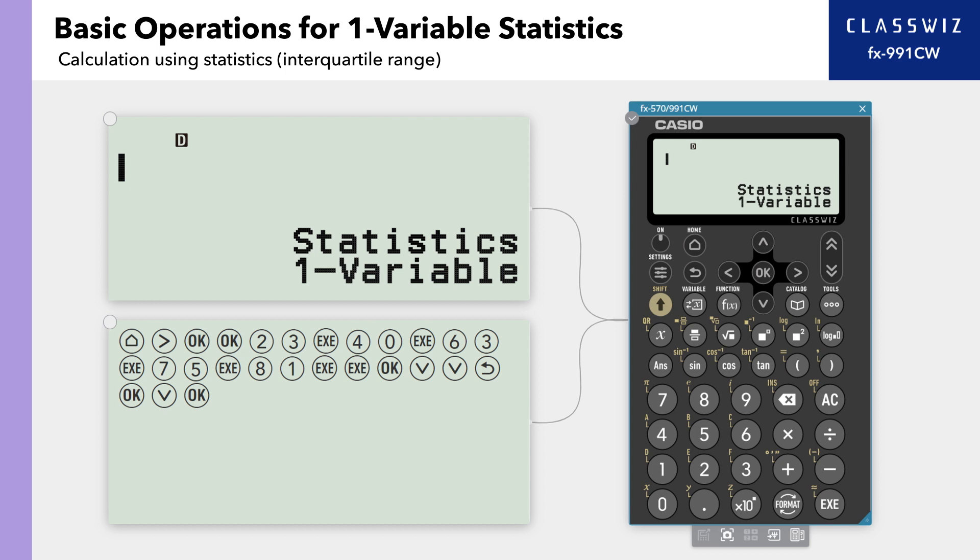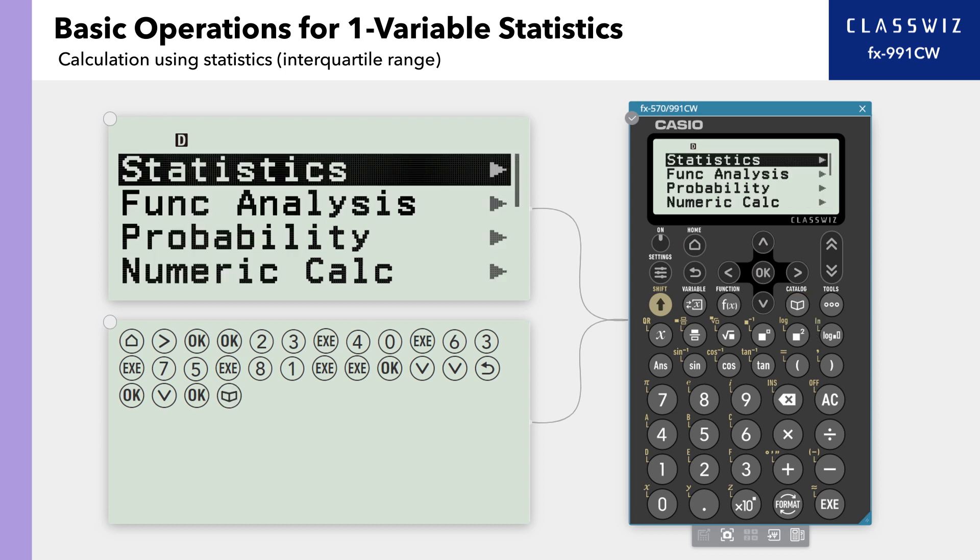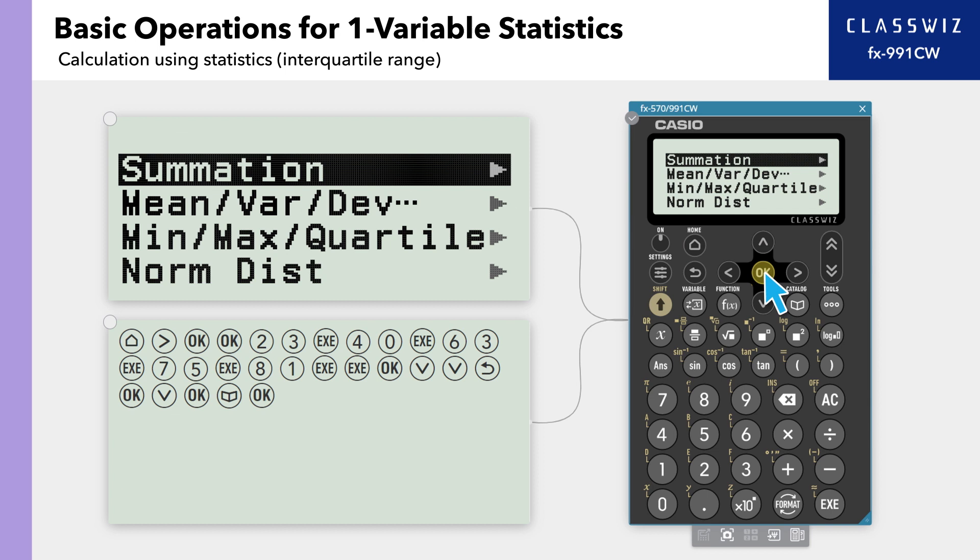Next, press catalog and select statistics. From here, you can select various statistical values to perform calculations. Now, we can calculate the quartile range, the third quartile minus the first quartile.